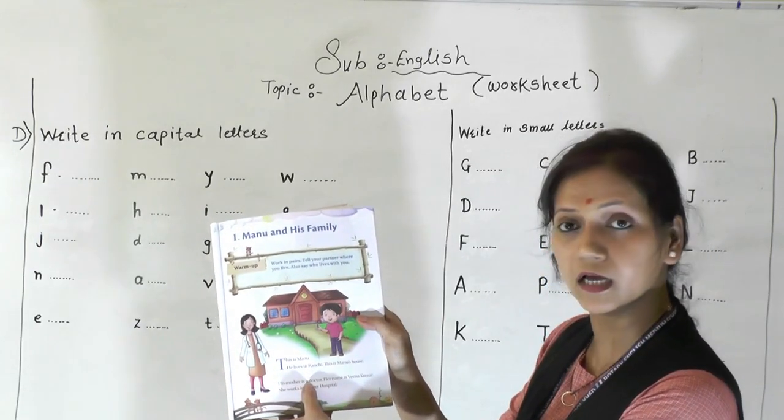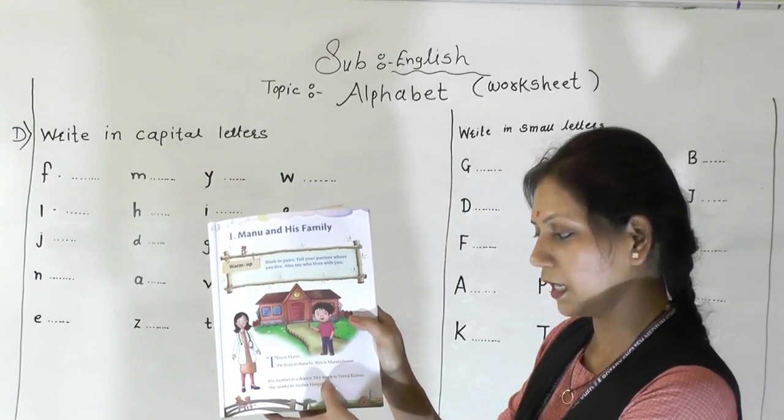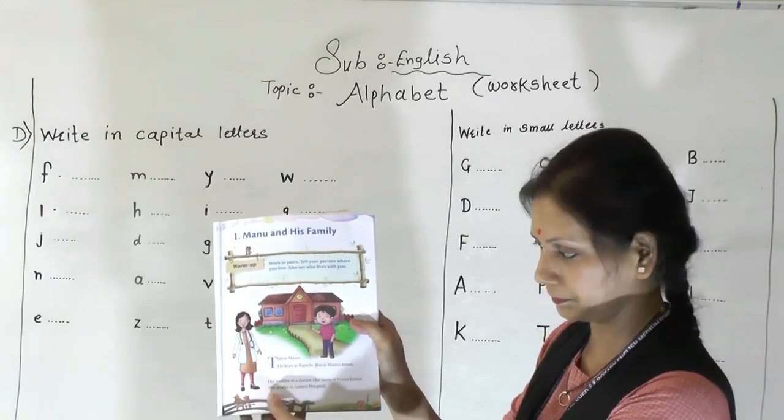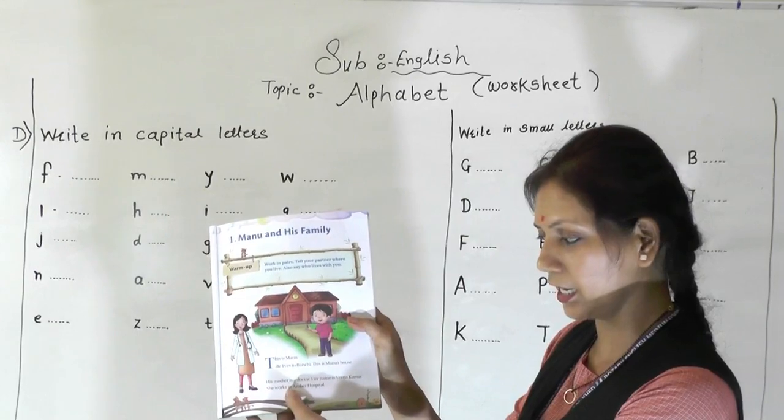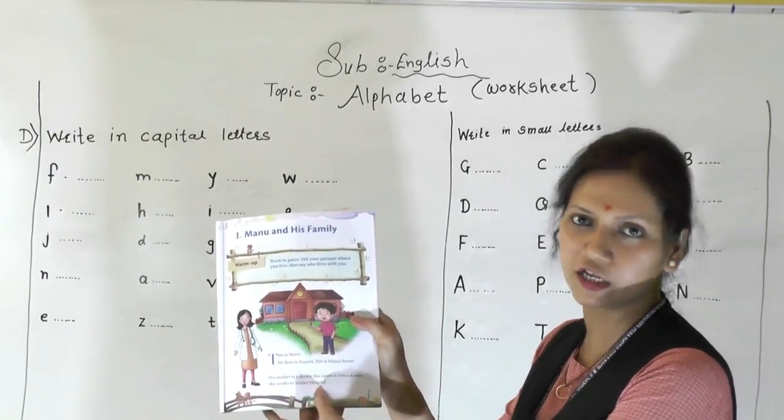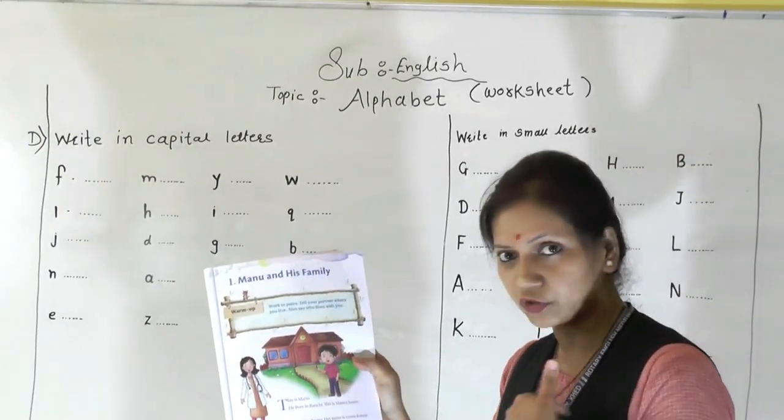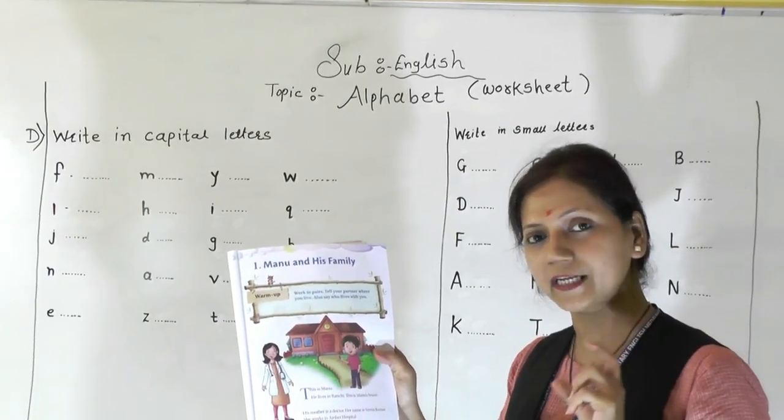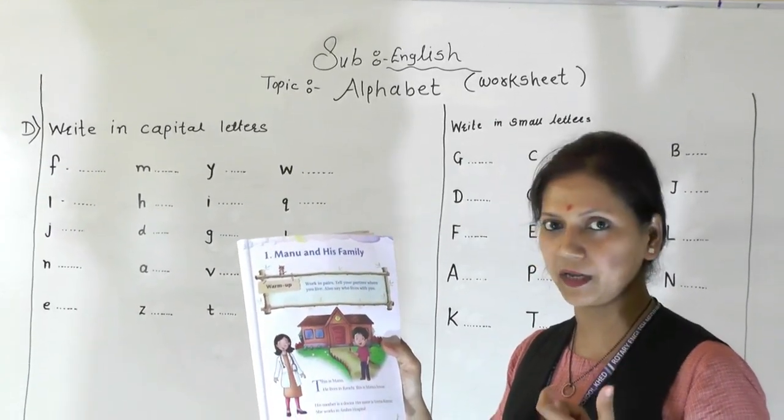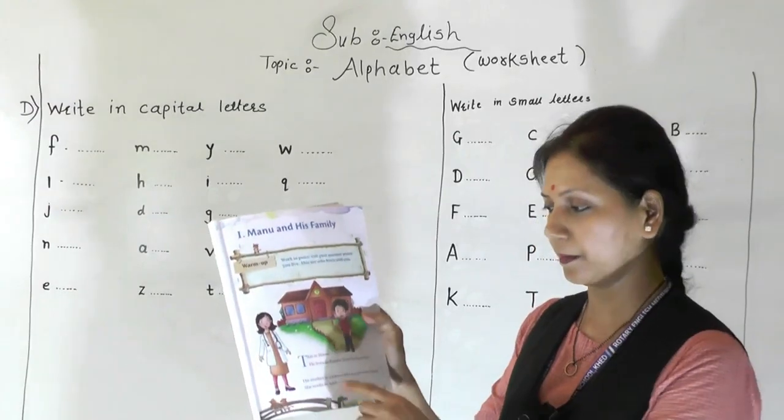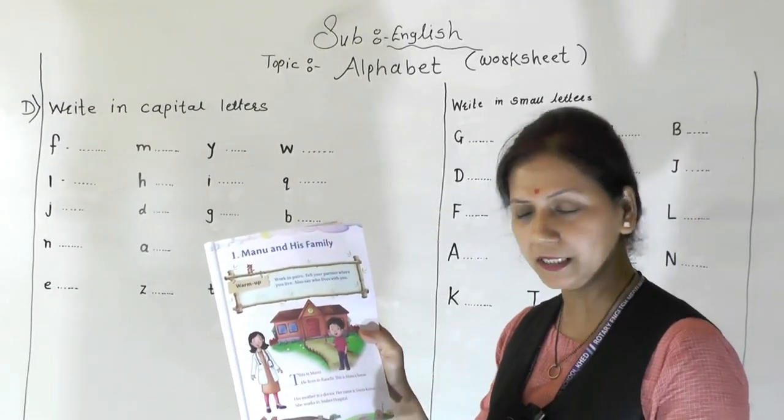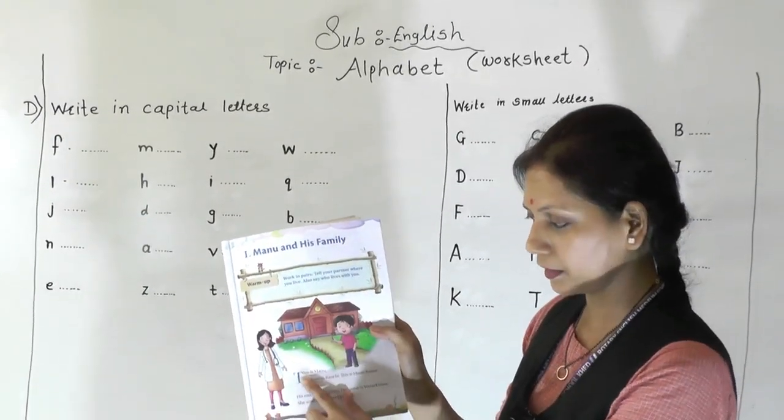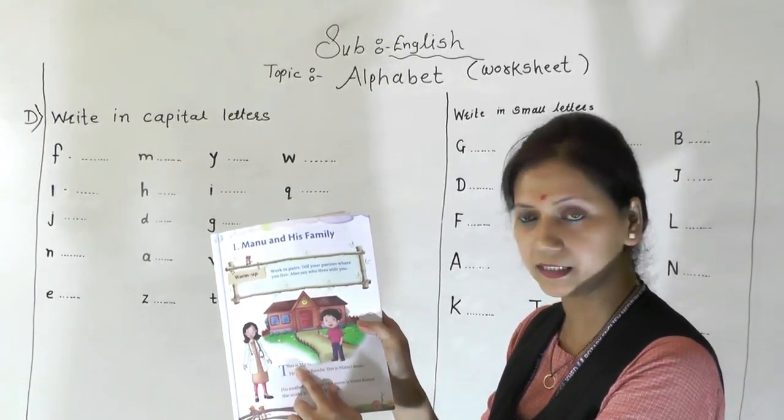Her name is Veena Kumar. She works in Umber Hospital. I'm going to repeat again so you also repeat after me. Today we are going to read only first pair and tomorrow next pair. We will read the paragraph twice. So once again I am going to read: Manu and his family. This is Manu, he lives in Ranchi.